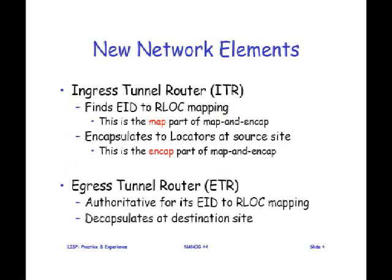There are two new network elements. One's called ITR — Ingress Tunnel Router. This terminology has found its way into the lexicon and is pretty standard now. Basically this is the device that sits on the edge of your network that finds the EID-to-RLOC mapping — that's the map part of mapping and encap. Then it encapsulates to the locator (the RLOC) at the source site — that's the encap part — and sends it across to the ETR, which decapsulates it and sends it on to the destination site.